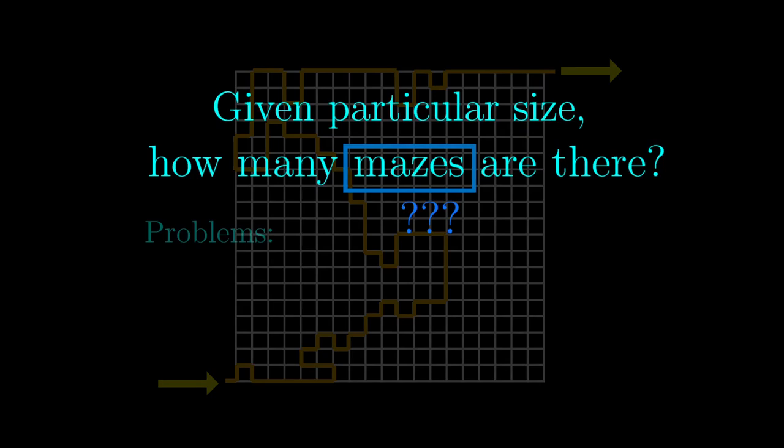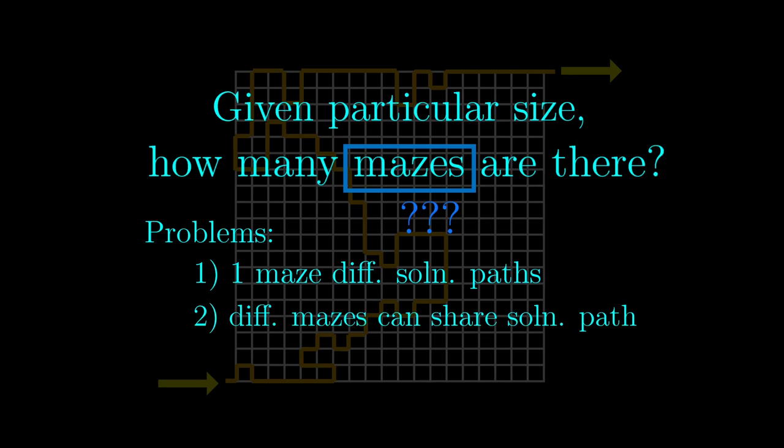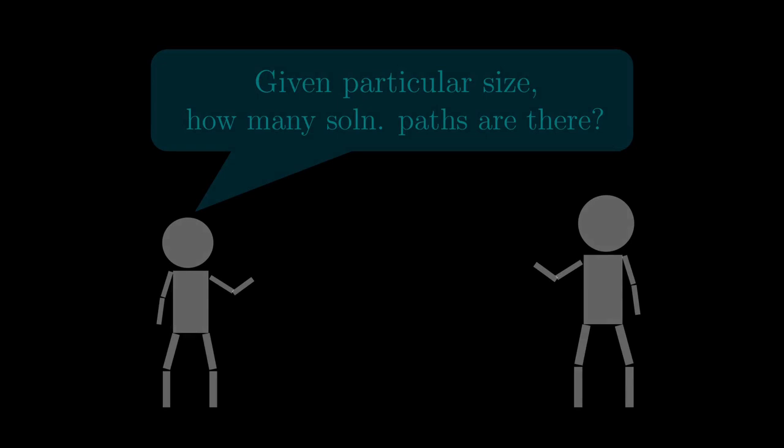But of course, there are problems with this simplification, which I completely ignored at the time. For one thing, one maze could have different solution paths, and the other point is that different mazes could have the same solution path. But I didn't care, as counting solution paths is way less ambitious than counting mazes.